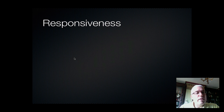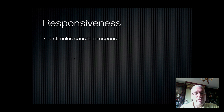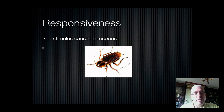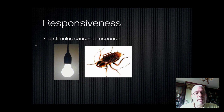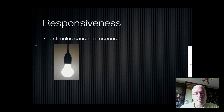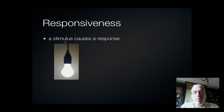All living things respond to their environment in some way, which means if there's a stimulus, the stimulus causes a response. A good example of this would be insects — roaches are very sensitive to environmental stimuli, for example light. You turn on a light in a dark room, and if there are roaches on the floor, they're going to run away. This is their response to the stimulus. All living things have a way of responding to stimuli in their environment.